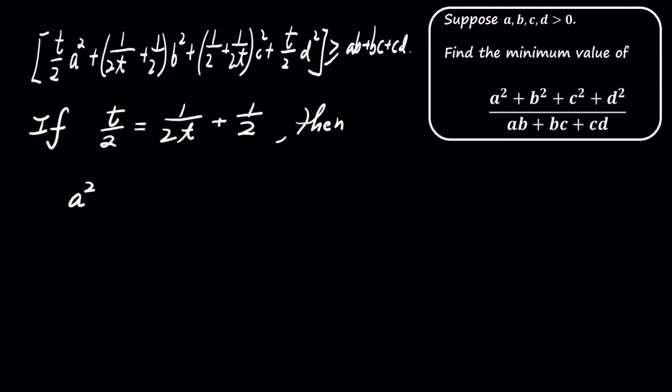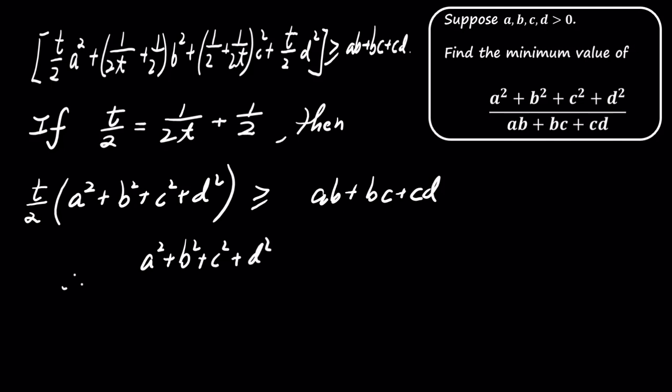t over 2 times a squared plus b squared plus c squared plus d squared is greater than or equal to ab plus bc plus cd. Dividing both sides by ab plus bc plus cd...